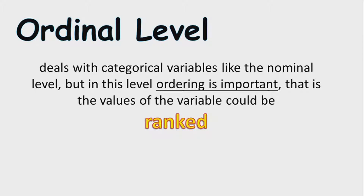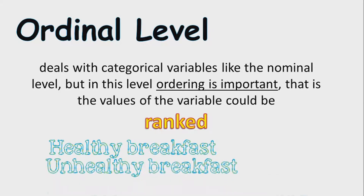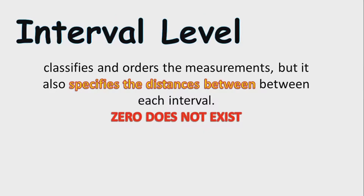Number two: ordinal level. Ordinal level deals with categorical variables like the nominal level, but in this level, ordering is important — the value of the variable could be ranked. This is still qualitative data, but it can be ordered. For example: healthy breakfast, unhealthy breakfast, and no breakfast at all. This qualitative data can be ranked — healthy breakfast is ranked first, unhealthy breakfast second, and no breakfast is last.